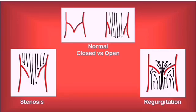For example, in the case of a mitral regurgitation, when the ventricle contracts, because the mitral valve isn't closed well enough, blood will get pushed into the left atrium.